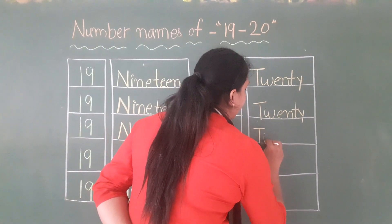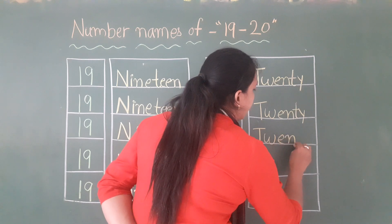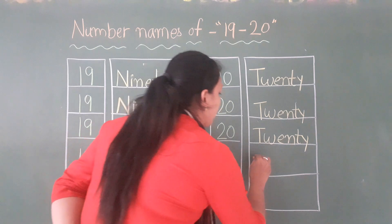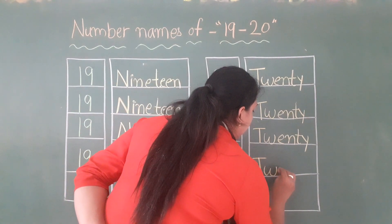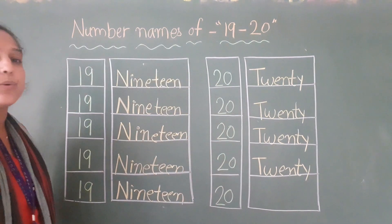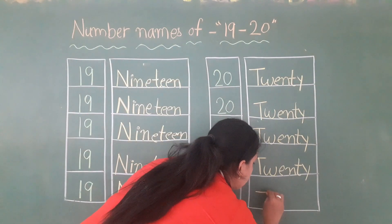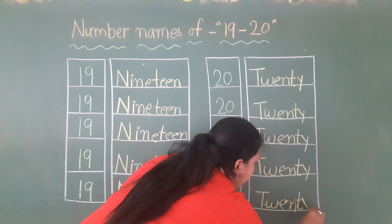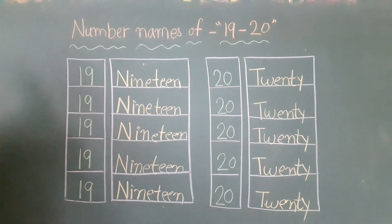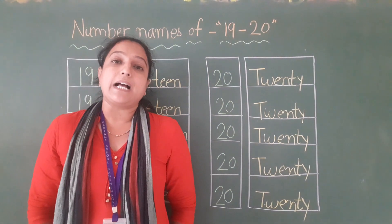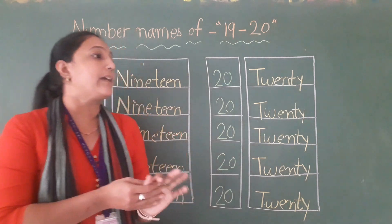Phir se bolenge: T-W-E-N-T-Y. 20. T-W-E-N-T-Y. 20. Aur last mein phir se likhenge T-W-E-N-T-Y. 20. Toh aaj humne dekha 19 aur 20 ka number ka spelling.